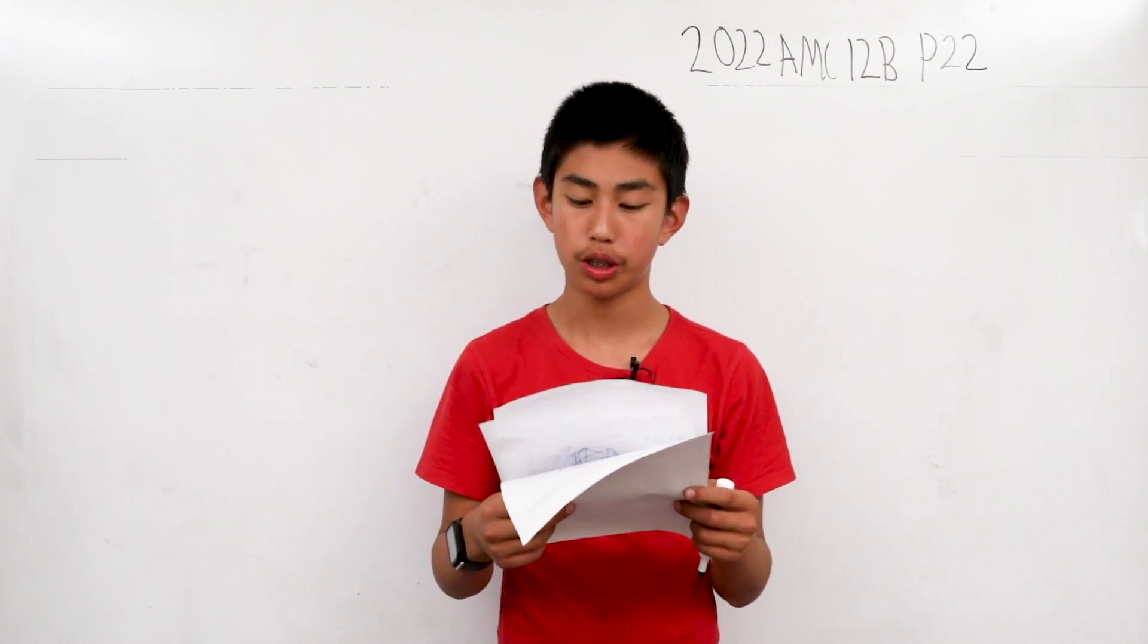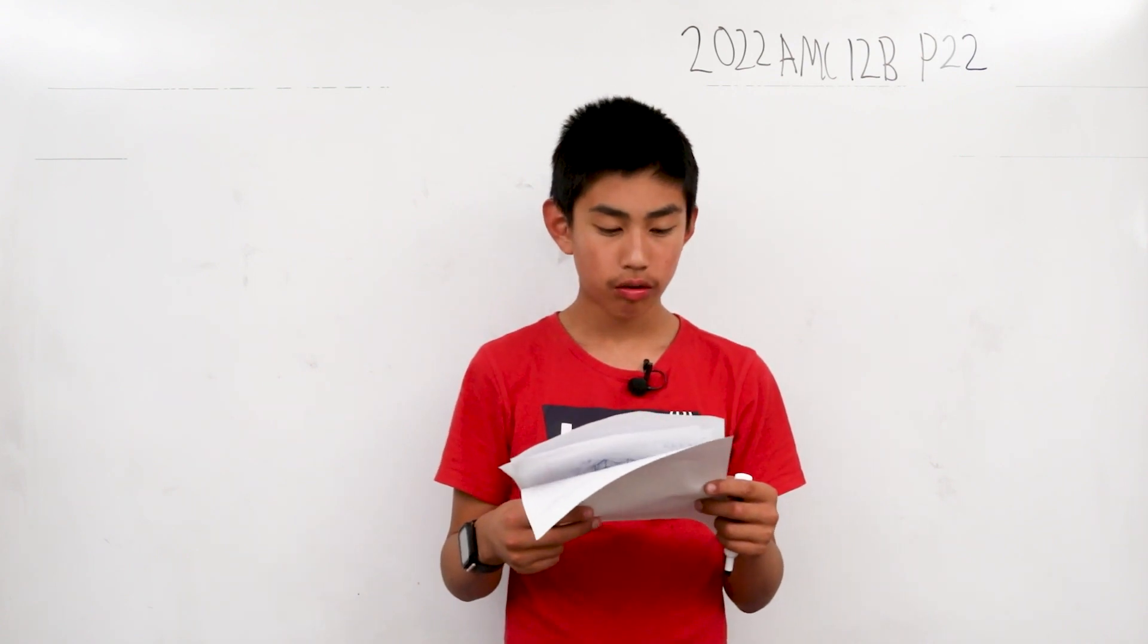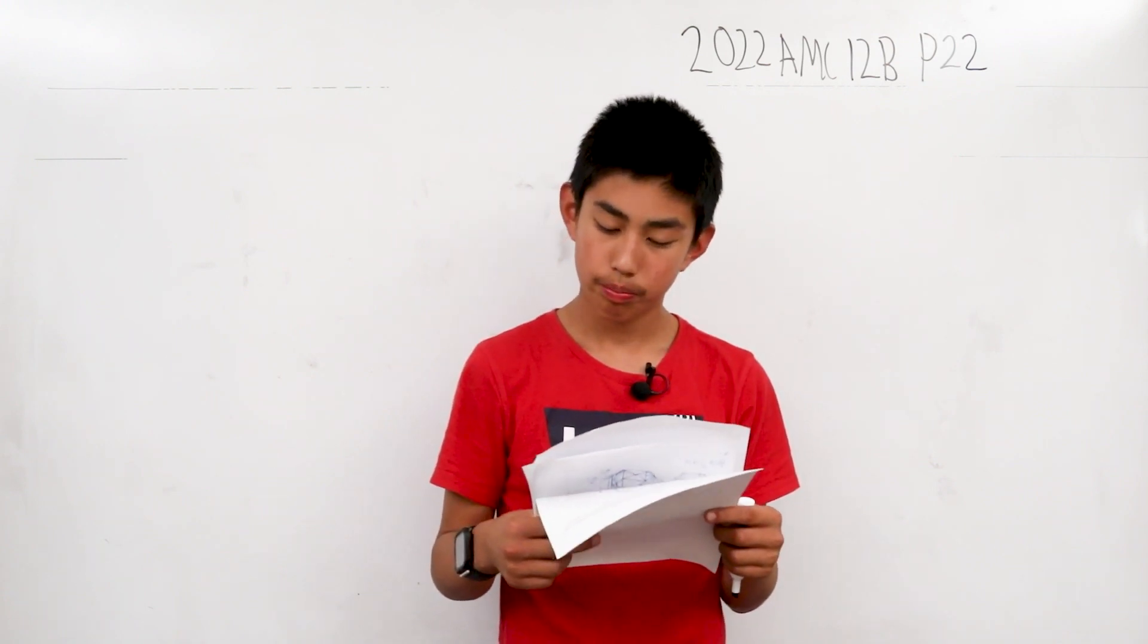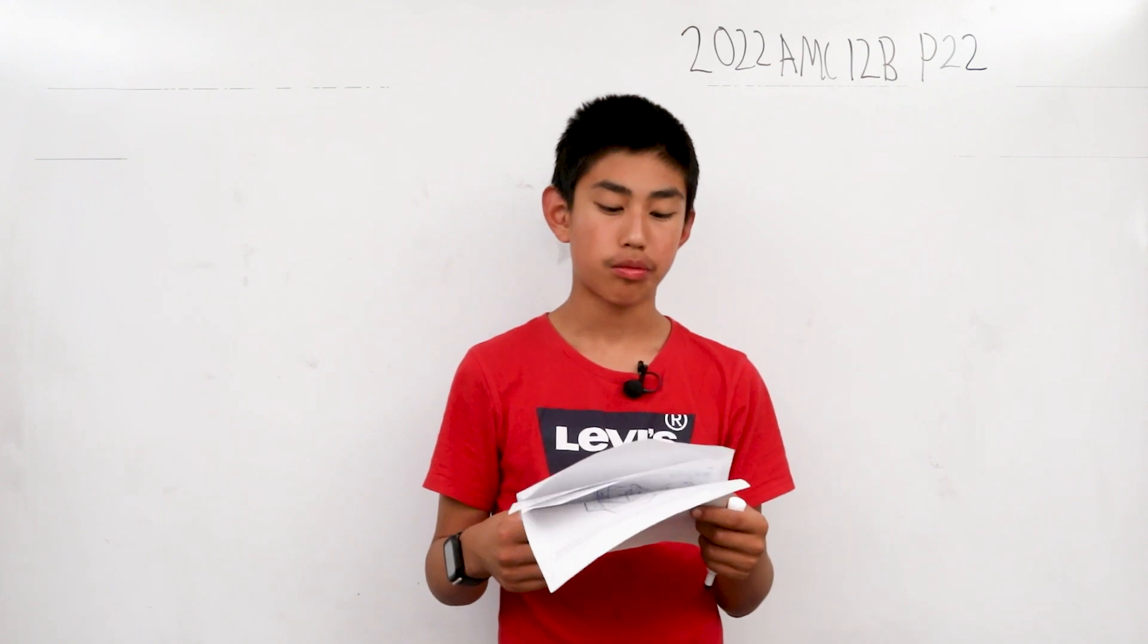For n equals 1, 2, and 3, Amelia chooses a time duration t_n and an increment x_n independently and uniformly at random from the interval 0 to 1. During the nth step of the process, Amelia moves x_n units in the positive direction using up t_n minutes.